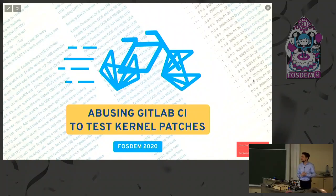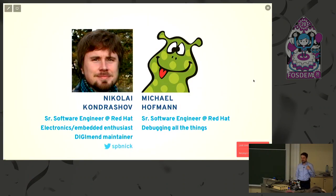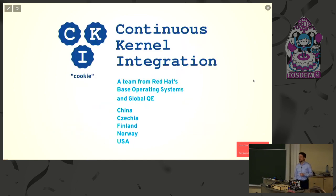We are going to talk about this. It's me, Nikolai Kondrashov, and Michael is sitting here—he'll join me later. Neither of us actually looks like that anymore. We are coming from Red Hat CKI team, or CKI project, and we are a distributed team doing kernel CI at Red Hat.